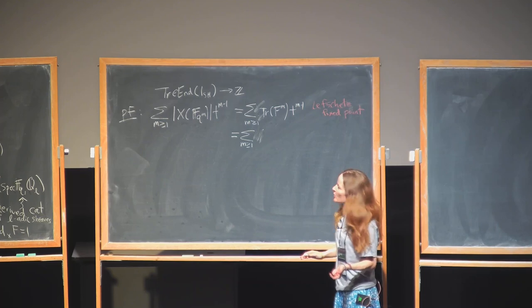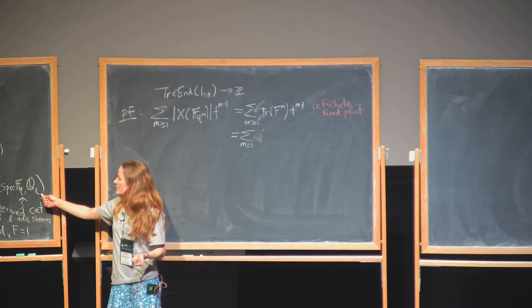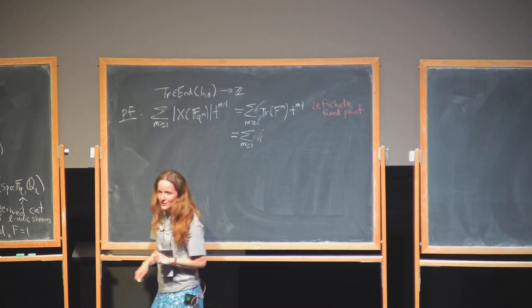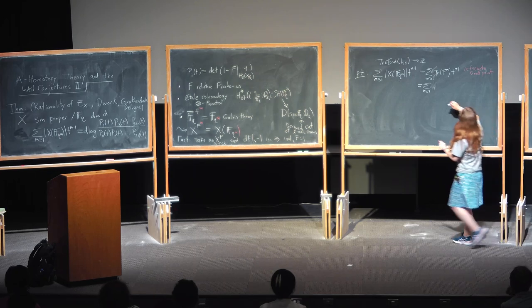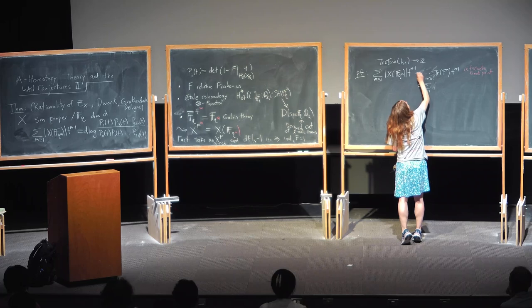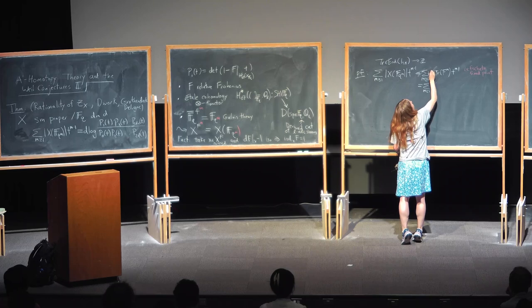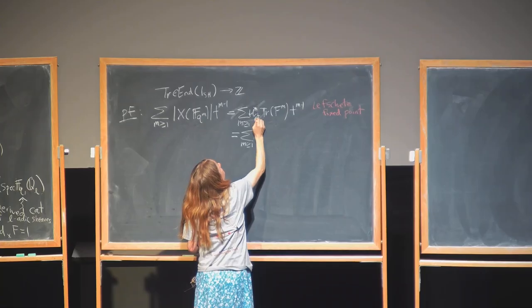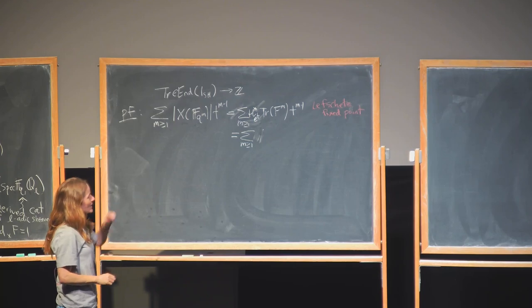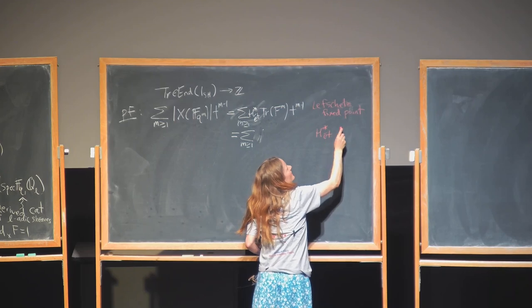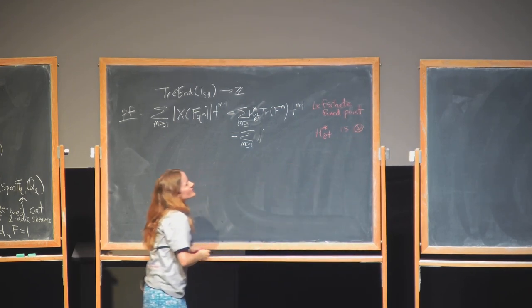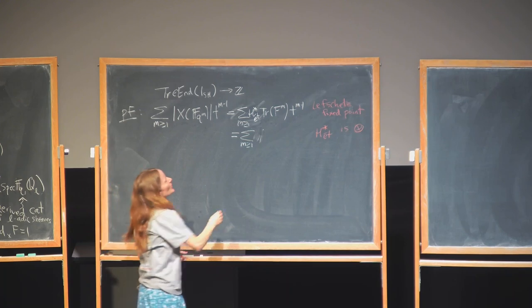We can apply cohomology and get down to a place where the trace is Q_ℓ, and that integer just maps to that integer. So this really is just formal: the number of fixed points of Frobenius are the trace of F^m, and since H-star is symmetric monoidal, it preserves the tensor product. We can switch the order.